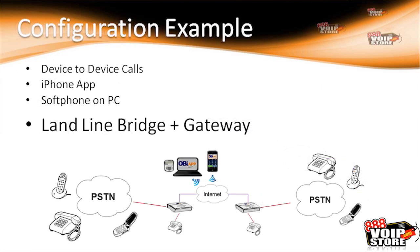Expanding on that again, we can now connect one of the OBi110s to a landline bridge or SIP account, and the other devices can then call into that. They're presented with an IVR menu to either call the device or dial out over that device's telephony circuits or SIP circuits. You have to grant people permission to do that — you can't just plug these in and have people making calls through your system. That Circle of Trust I mentioned provides a level of security, but it does give you this wide range of connectivity options.